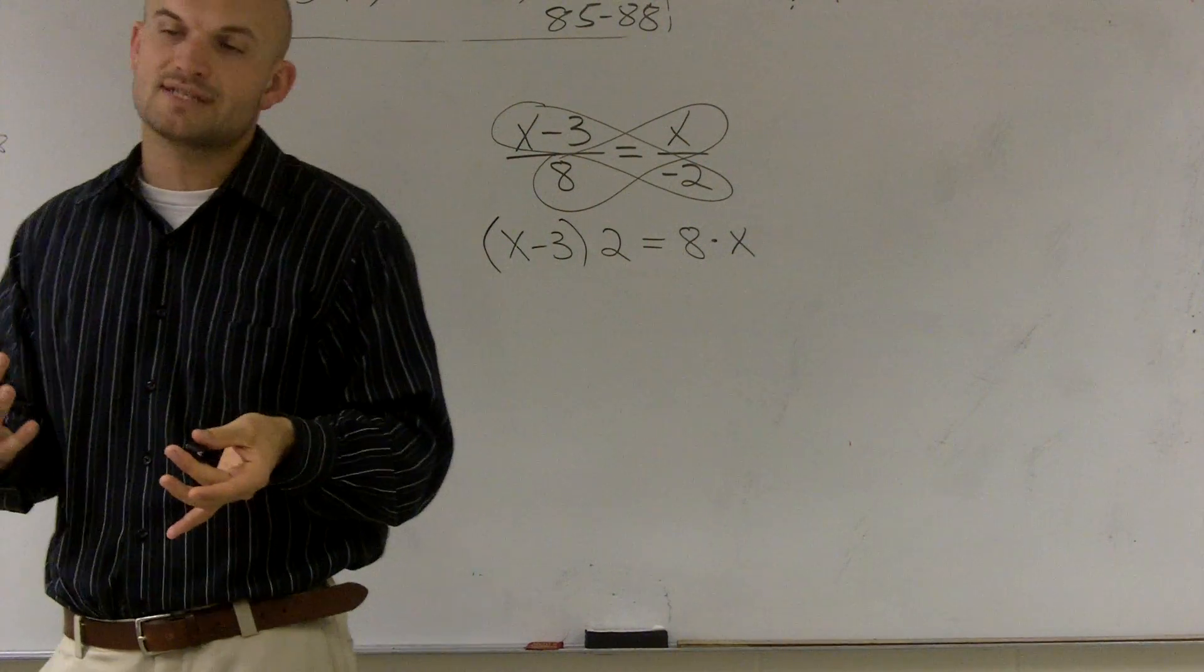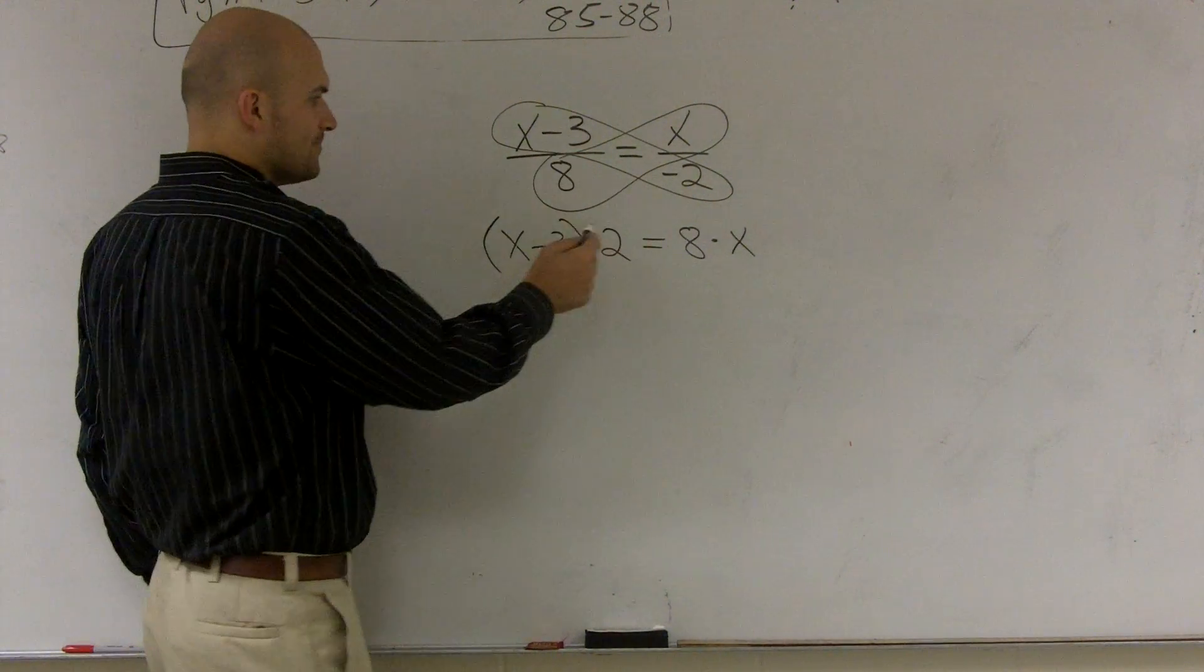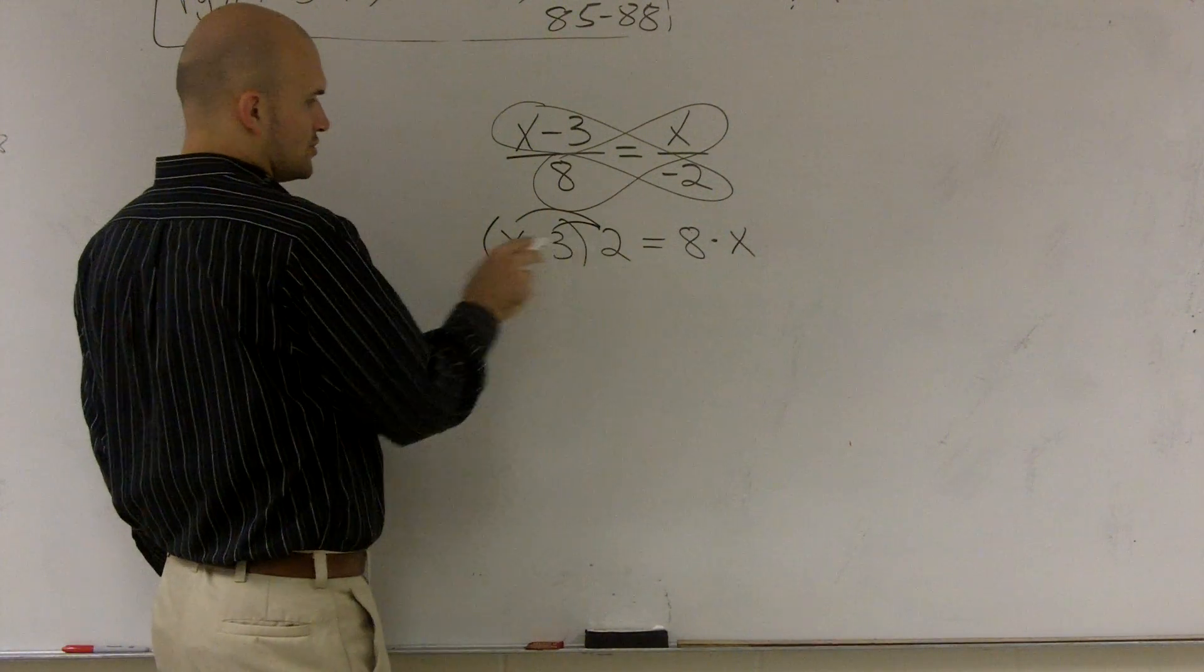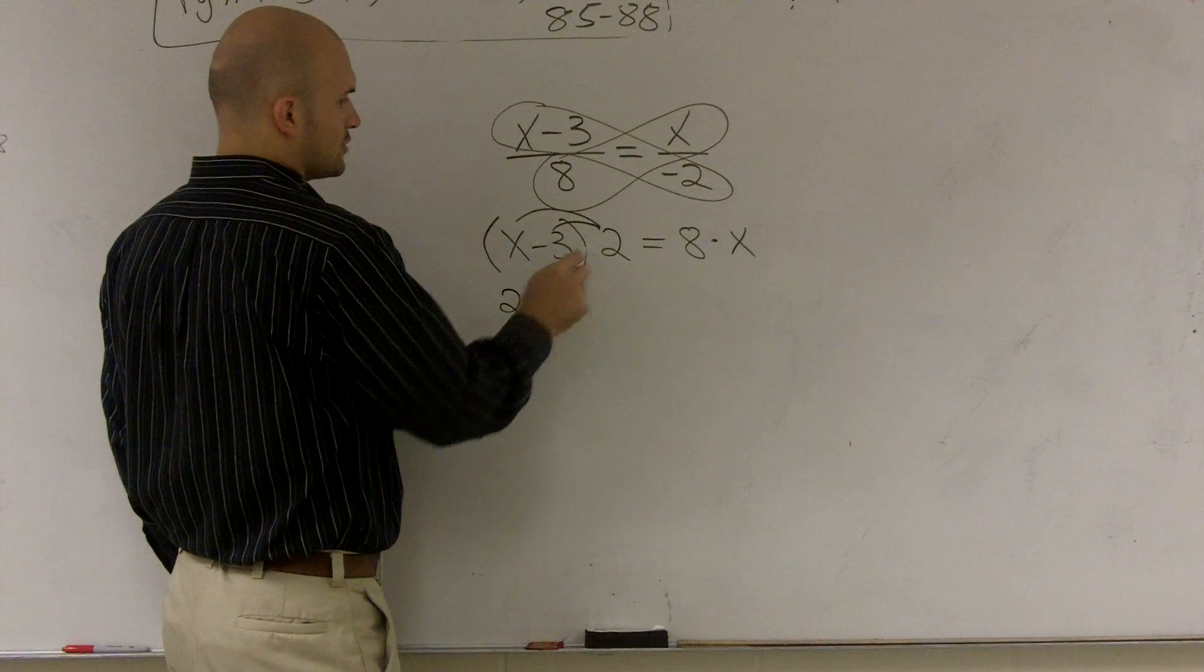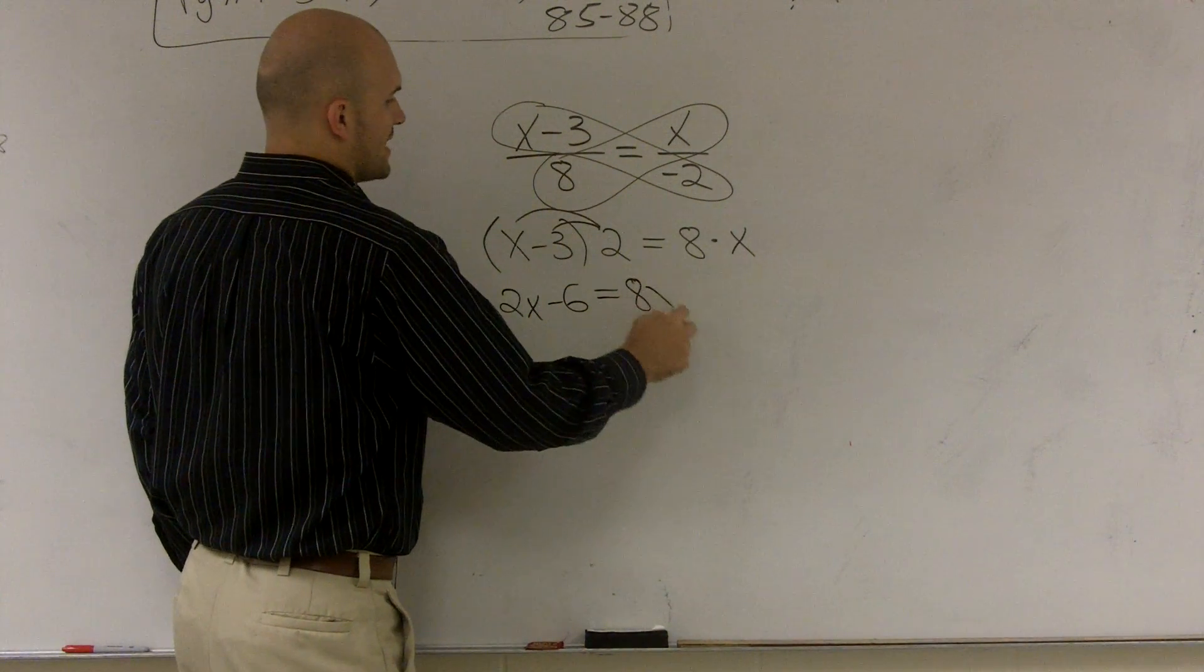And what that will help you understand is when doing that, now you can use your distributive property to multiply your negative 2 times both those values. So negative 2 times x gives you negative 2x. Negative 2 times negative 3 gives you negative 6 equals 8x.